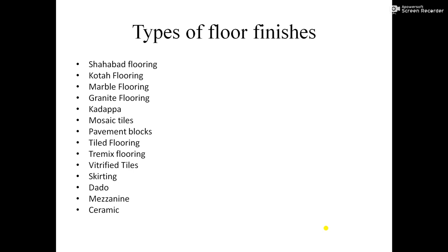The different types of floor finishes used in construction include: shahabad flooring, kota flooring, marble flooring, granite flooring, kadappa, mosaic tiles, pavement blocks, tiled flooring, trimix flooring, vitrified tiles, skirting, dado, mezzanine, and ceramic. These are some of the materials which are used in floor finishes.